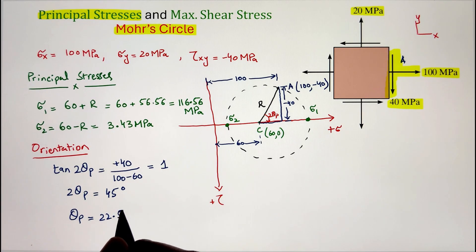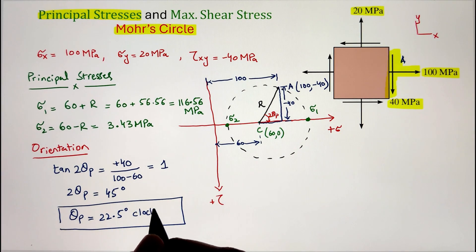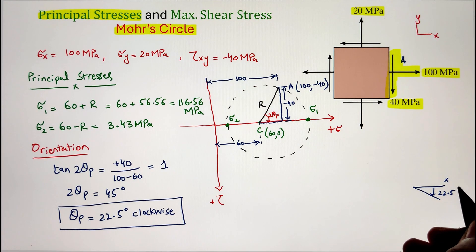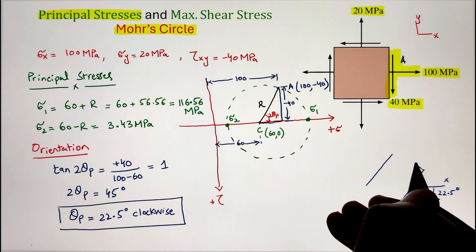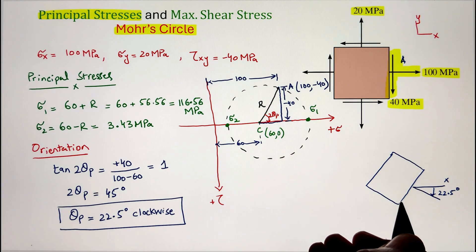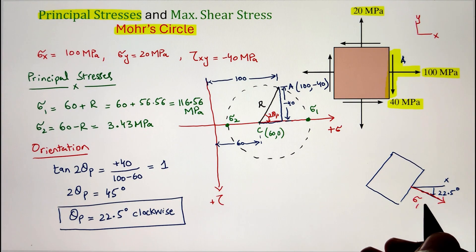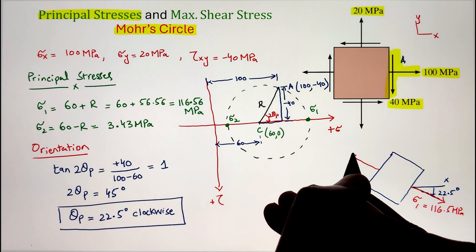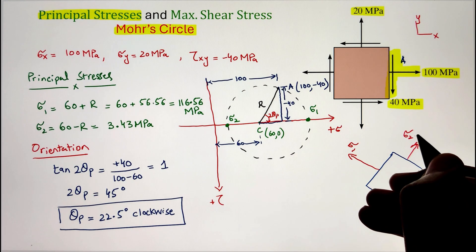This angle is measured in the clockwise direction from our reference line CA, meaning the principal stress plane is oriented clockwise. To draw this on the stress element, we start with our horizontal x-axis as the reference plane and go clockwise at 22.5 degrees. The stress element is drawn perpendicular to this line. The stress acting along this angle equals sigma 1 of 116.56 megapascal, whereas the stress 90 degrees from that is sigma 2 acting at 3.43 megapascal.